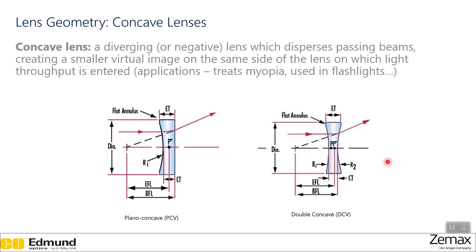The second main type of lens is called a concave lens, also referred to as a diverging or negative lens. This type of lens disperses passing beams, creating a smaller virtual image on the same side of the lens from which the light entered. Unlike the convex lens, it is thinner in the center and thicker on the edges, and it disperses rays outwards. Some applications include myopia correction and use in flashlights. On a ray diagram, solid rays are actual light rays, while dashed lines show the apparent path.